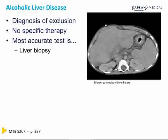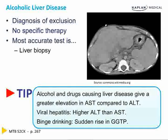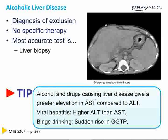Alcoholic liver disease is a diagnosis of exclusion; there's no specific therapy, and the most accurate test is a liver biopsy. Remember, alcohol and drugs causing liver disease give a greater elevation in AST compared to ALT. Viral hepatitis gives you a higher ALT than AST. Alcoholic hepatitis gives you a higher AST than ALT. Binge drinking will give you a rise in GGTP.